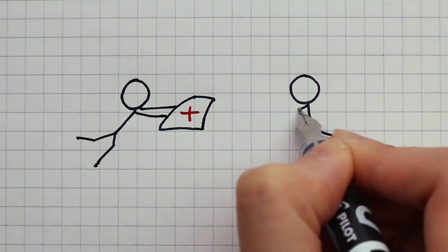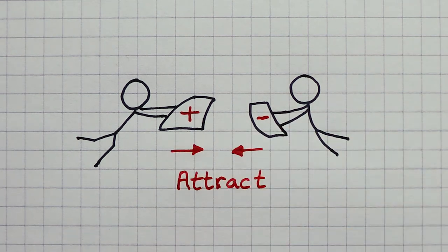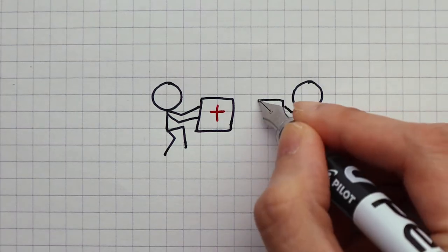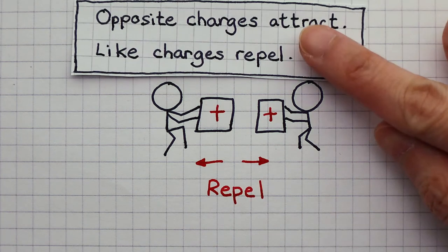A positive object will always be attracted to a negative object, but it will repel another positively charged object, according to this rule.